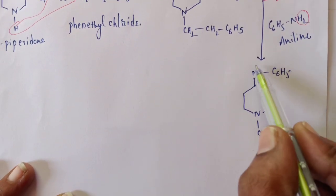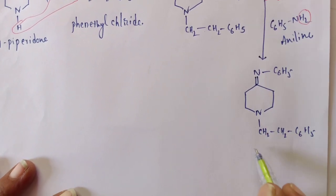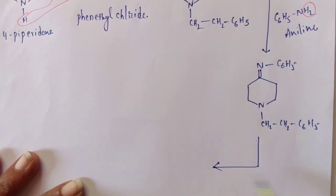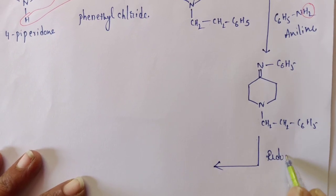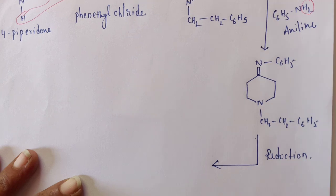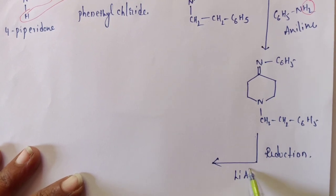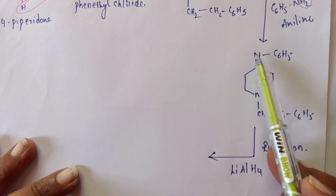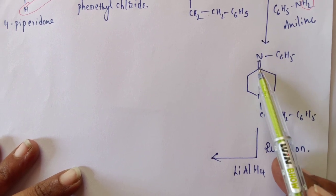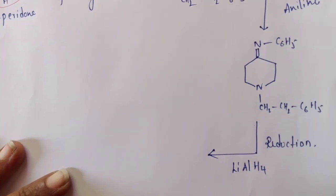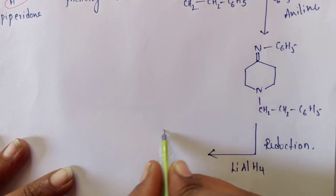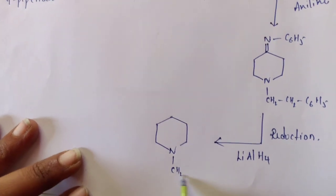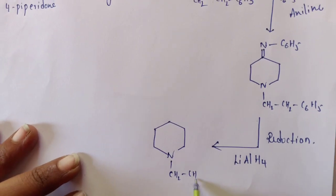The imine nitrogen then undergoes reduction. Reduction occurs in the presence of a reducing agent such as lithium aluminium hydride. Two hydrogens are added — one to the carbon and one to the nitrogen — breaking the double bond and forming the reduced amine product with –CH₂CH₂C₆H₅ and a single-bond NH–C₆H₅.